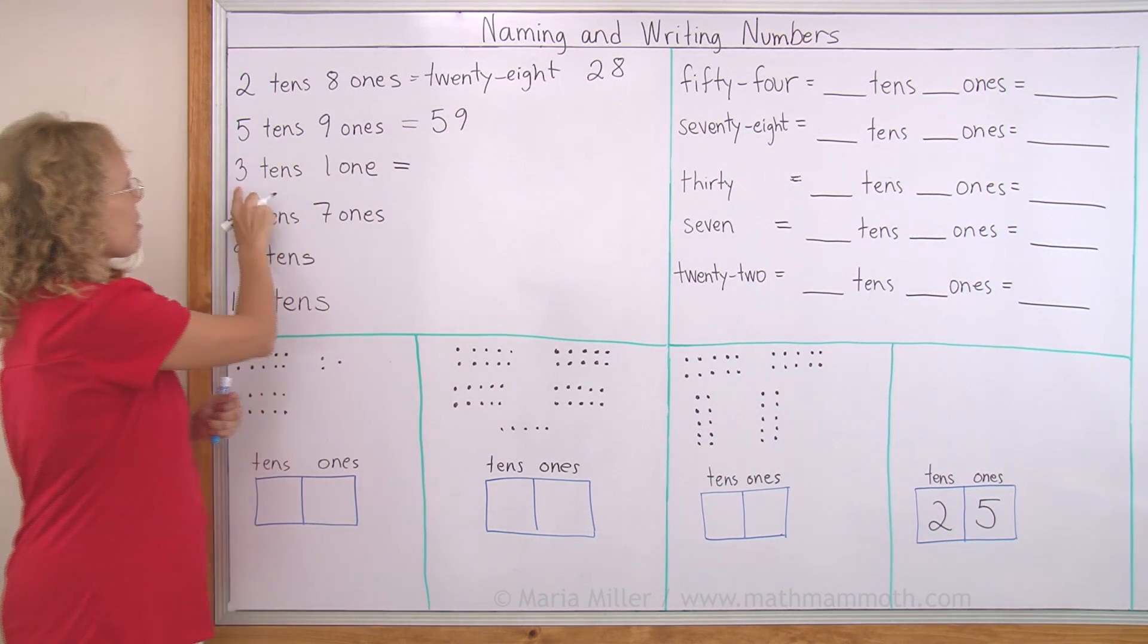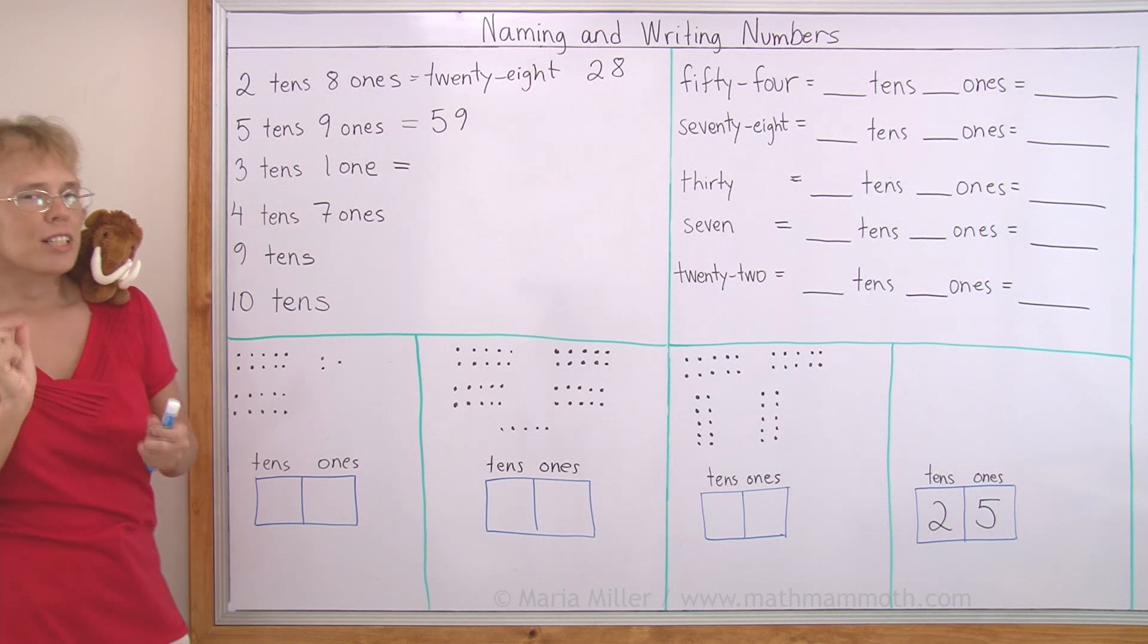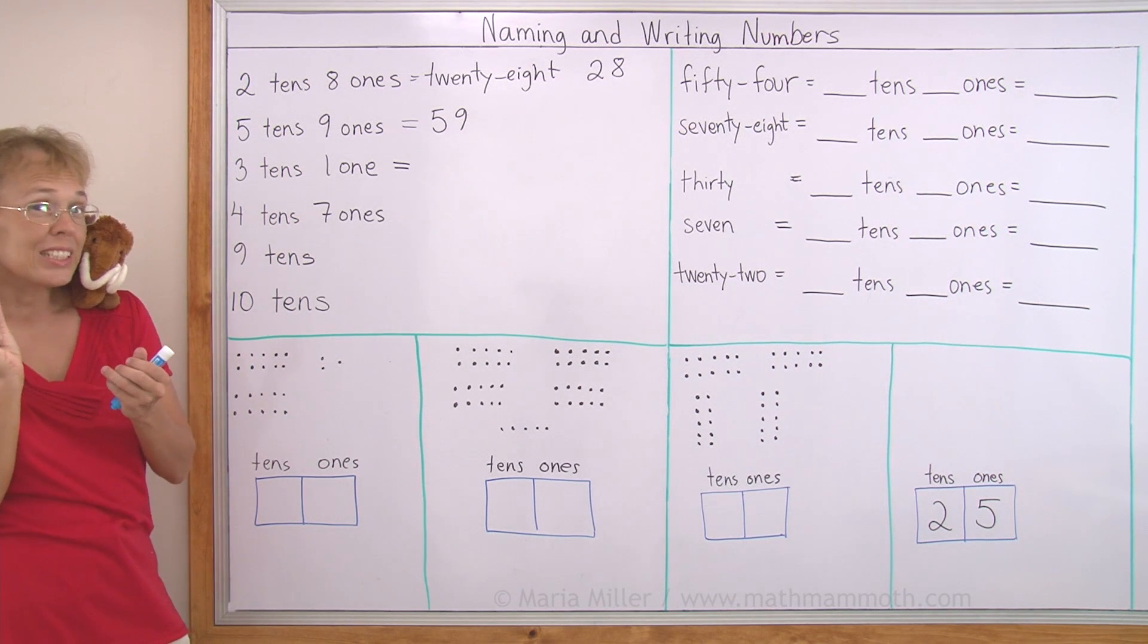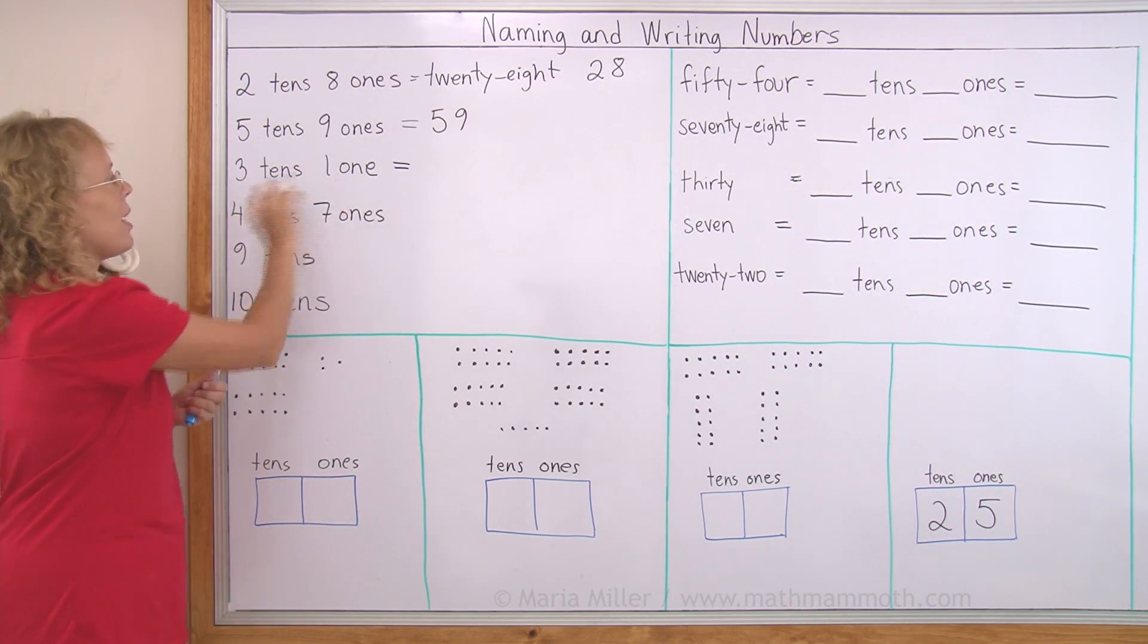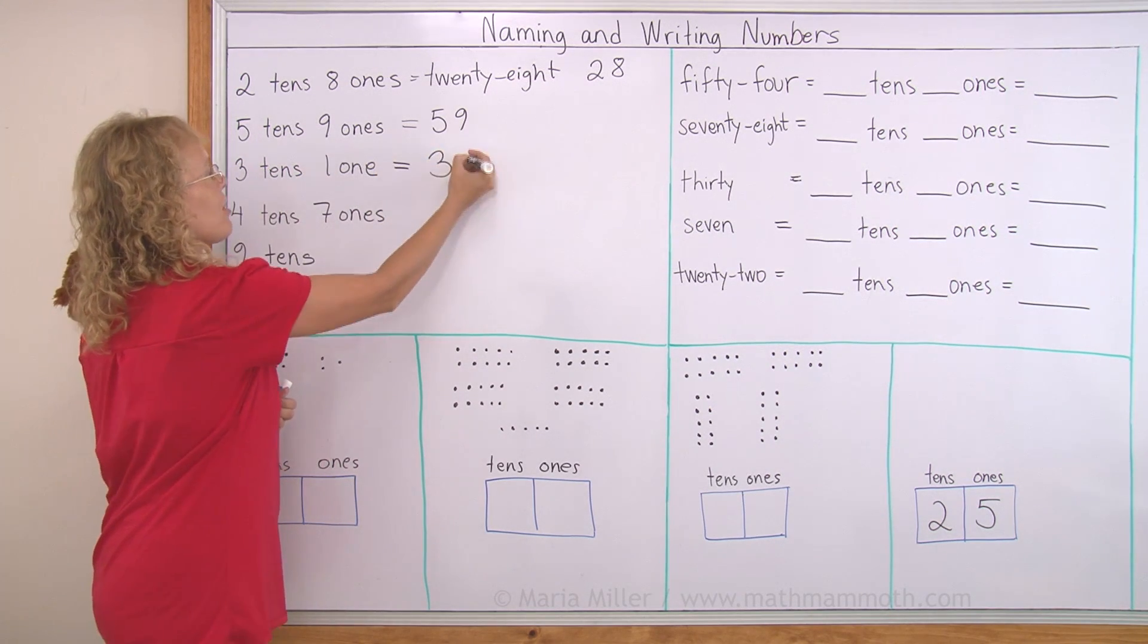This one, 3 tens and 1 one. 3 tens was, what word was it? Not 3-t, 30. 31. And it is written as 3 and 1.